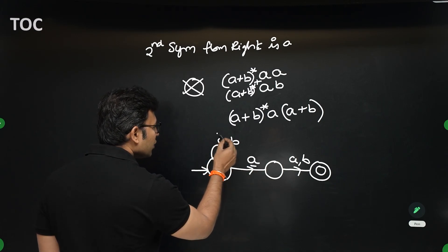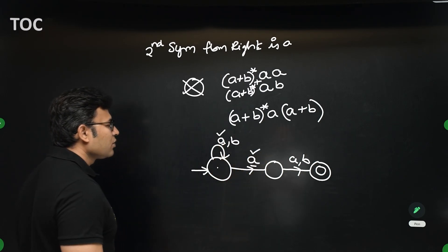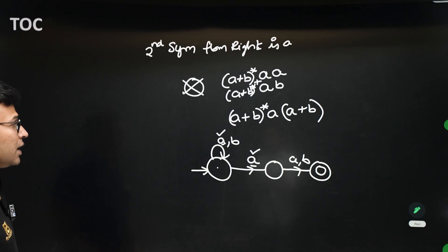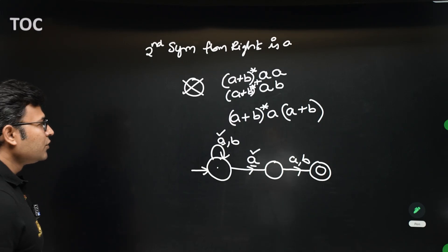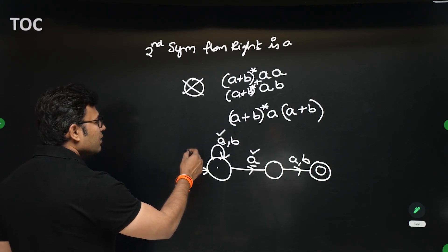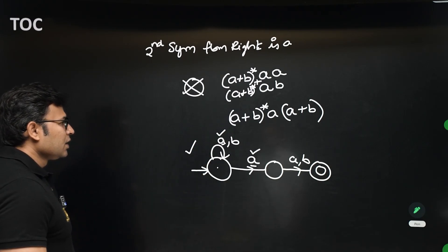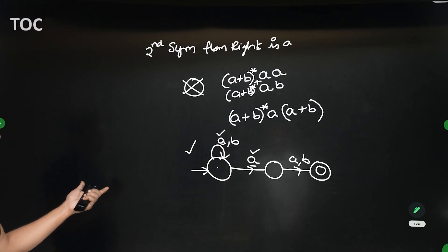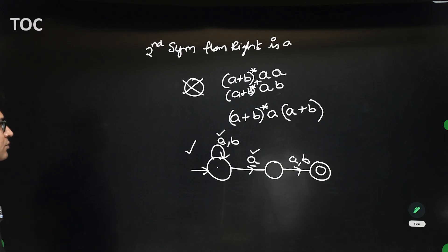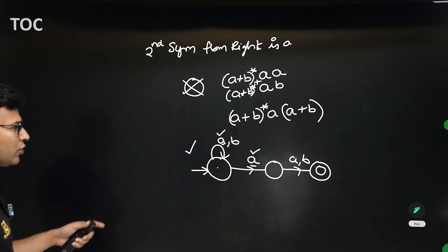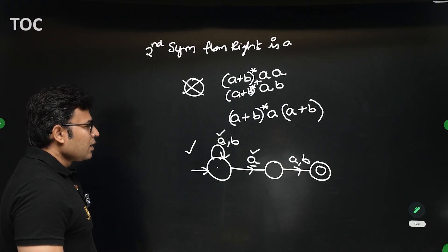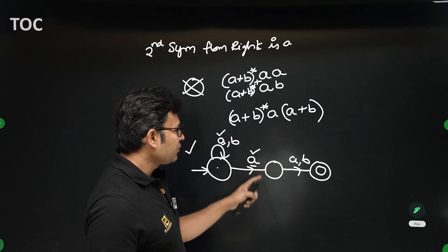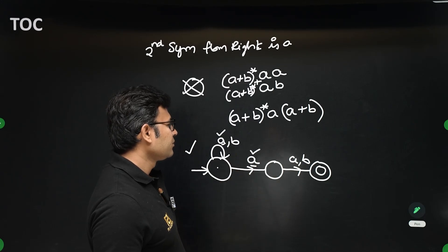This NFA cannot easily be converted to a DFA because on seeing 'a' from the same state it goes to the same state or to the next state — multiple transitions on the same symbol. I will show you an algorithm later that converts an NFA into a DFA and I'll take this example then. You should get 4 states in the DFA, but we won't do it now.